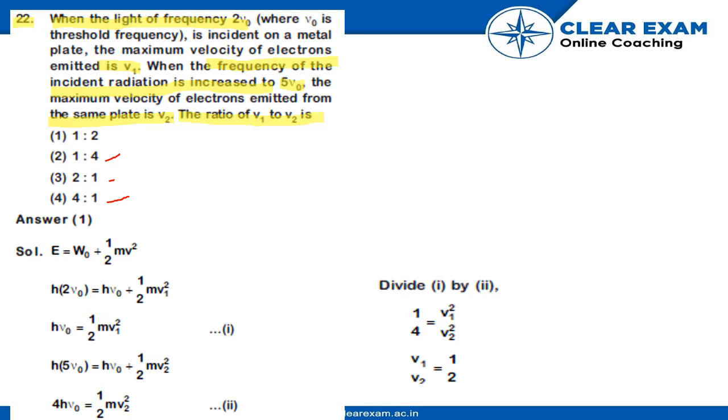So, we know that E equal to W0 plus 1 upon 2mv square, and E will be equal to 2hv0, and W0 will be equal to hv0 plus half mv1 square. So, 2hv0 minus hv0 will be equal to hv0 equal to 1 upon 2mv1 square. This is equation number 1.